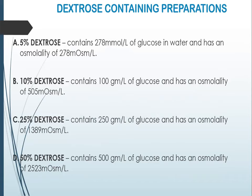Third in line are the dextrose-containing preparations. The commonly available ones are 5% dextrose, 10% dextrose, 25% dextrose, and 50% dextrose. 5% dextrose contains 50 grams per litre of glucose in water and has an osmolality of 278 milliosmol per litre. 10% dextrose contains 100 grams per litre of glucose with an osmolality of 505 milliosmol per litre. 25% dextrose contains 250 grams per litre of glucose with an osmolality of 1389 milliosmol per litre. 50% dextrose contains 500 grams per litre of glucose.